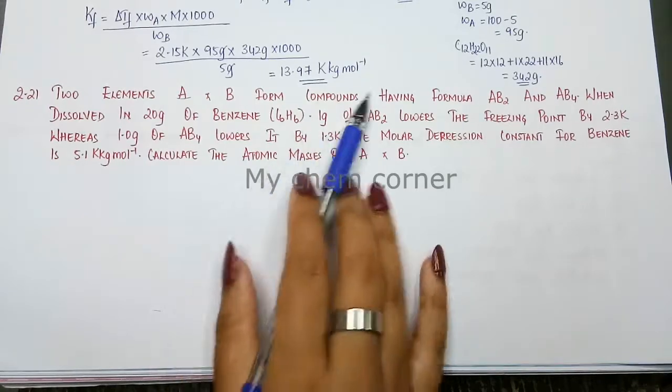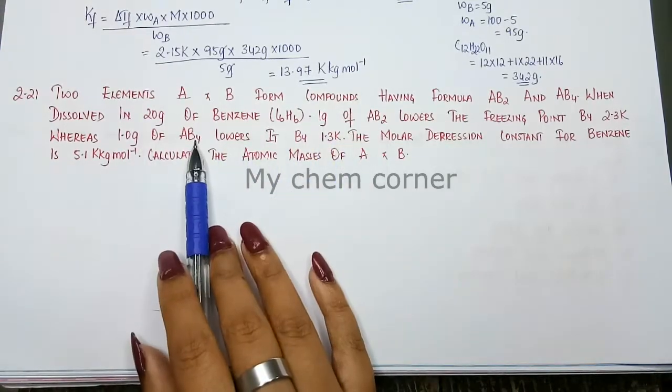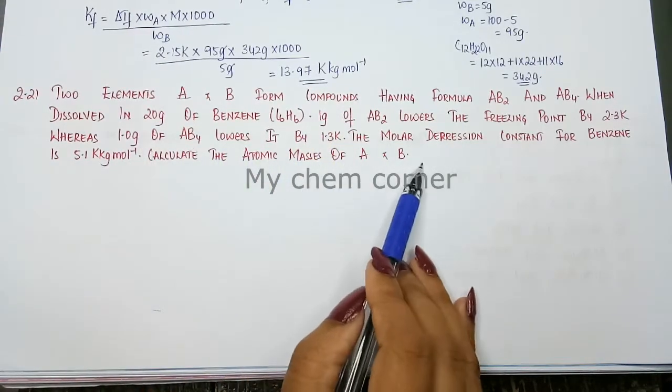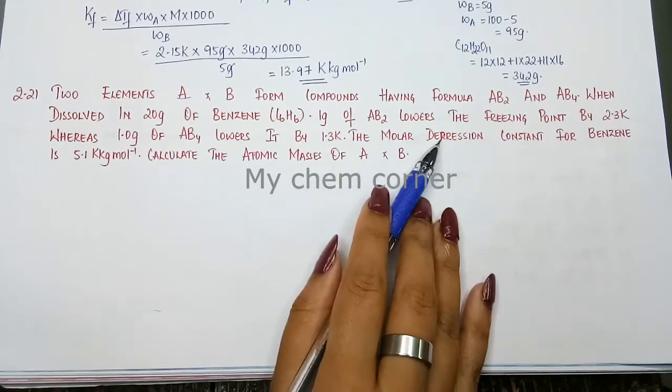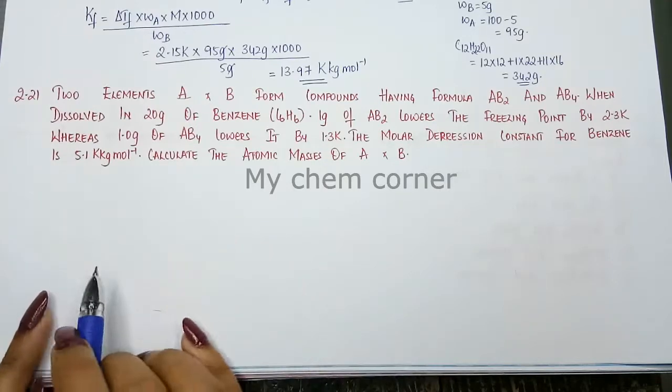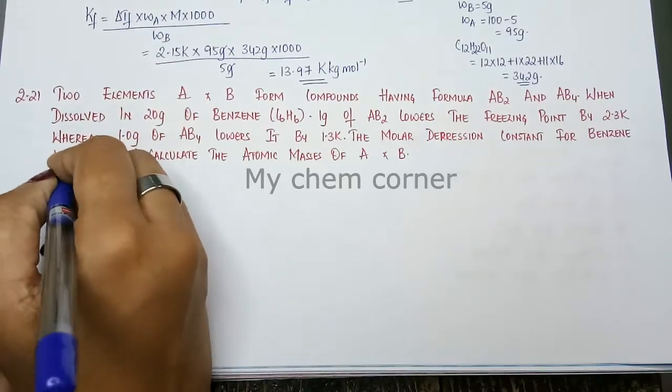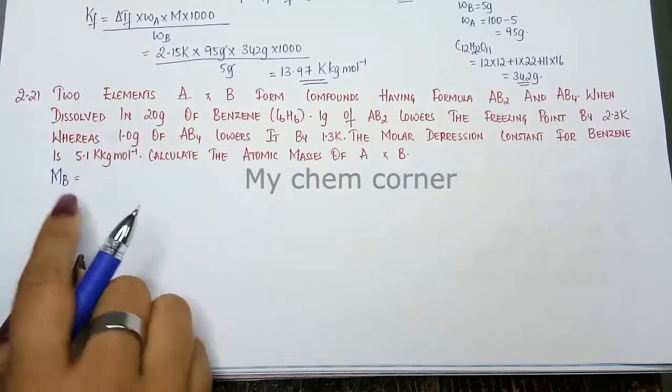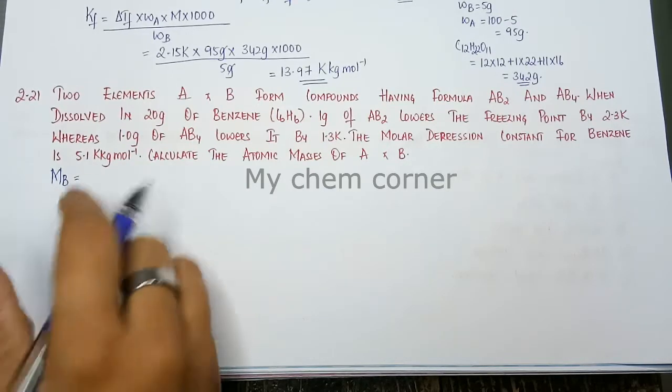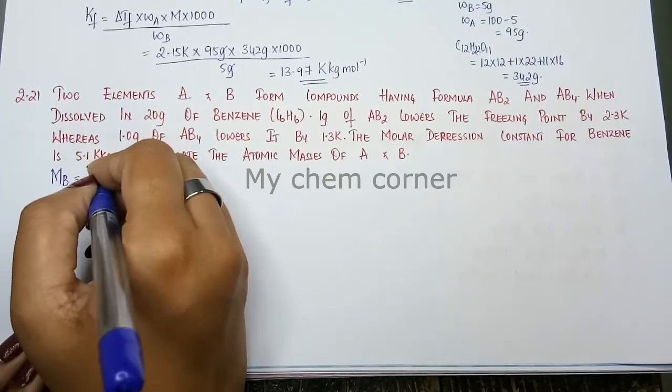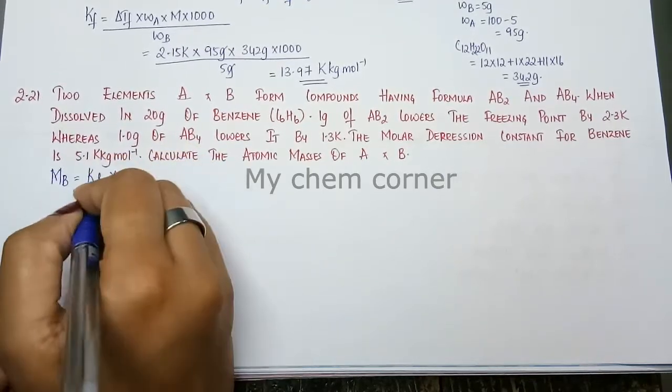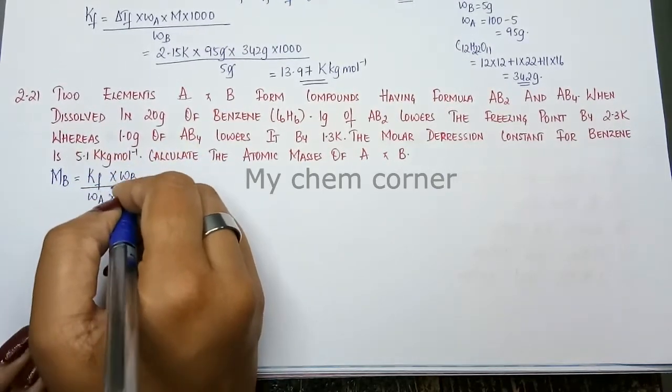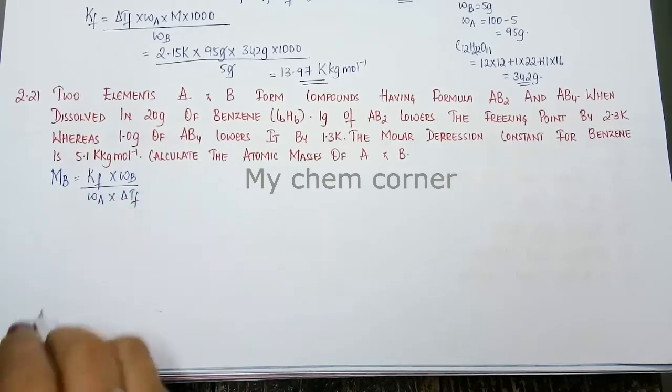Clearly values are given for two different compounds AB2 and AB4. We need to calculate atomic masses of A and B. So because it is asked with respect to molar depression constant, let's write down what the values are. So molar mass of the solute equals Kf into Wb divided by Wa into delta Tf.